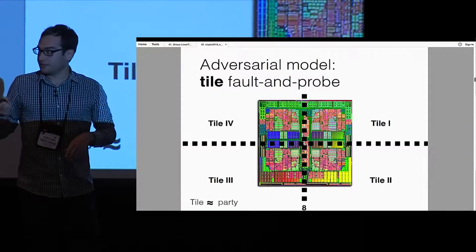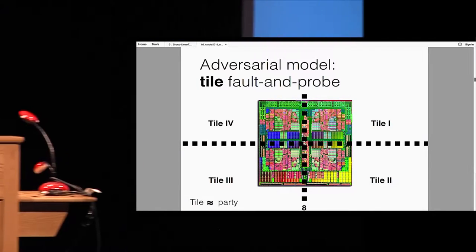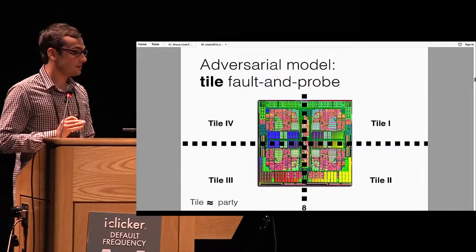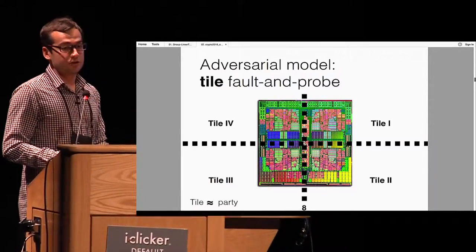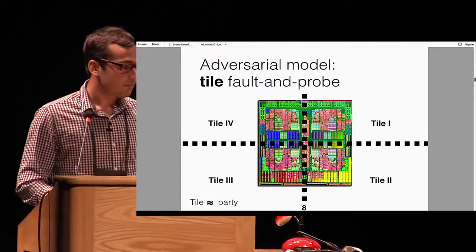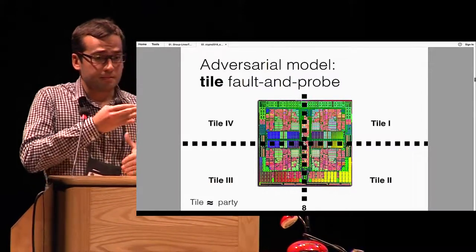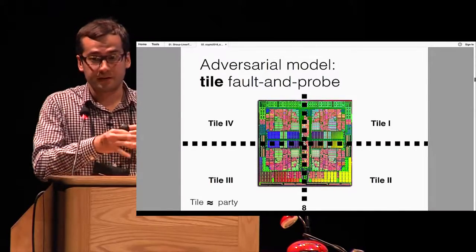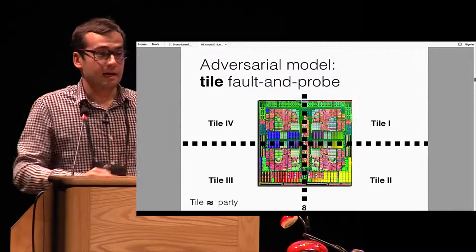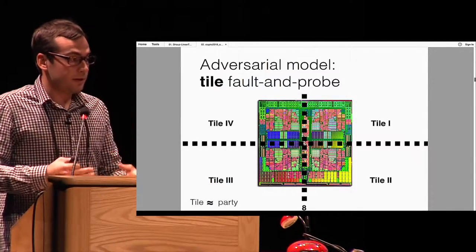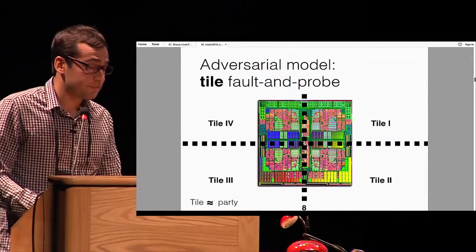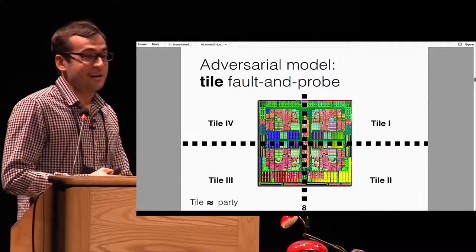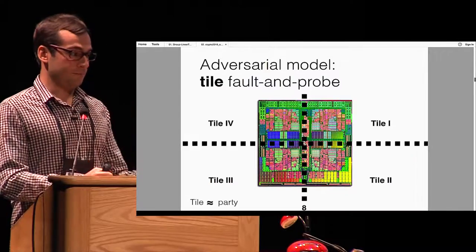One thing we are introducing in this paper is the tile probe-and-fault model. We assume a certain architecture for the chip and partition it into a series of tiles — a series of areas — making the high-level analogy that each tile is a party. We assume each tile has its own combinational or sequential logic, its own memory elements such as registers or RAM, and also its own control. This is inspired by multiprocessor designs where different cores can perform computation concurrently.